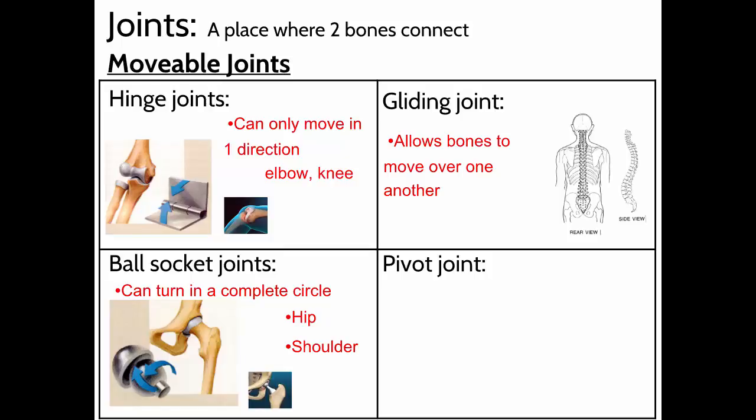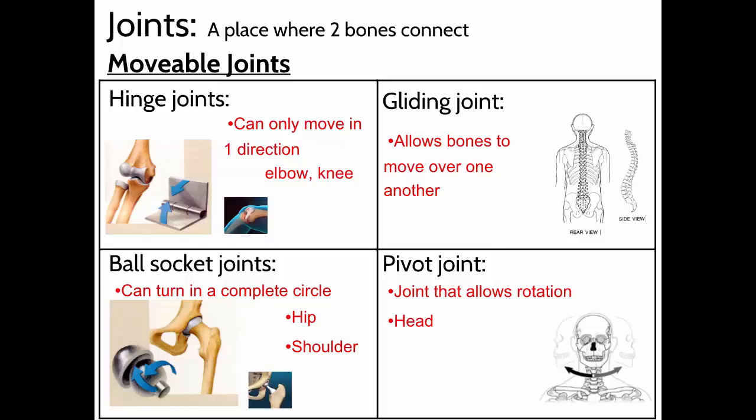Pivot joints allow for rotation — for example, your neck. You can rotate your head side to side — that's a pivot joint.